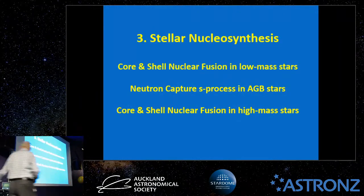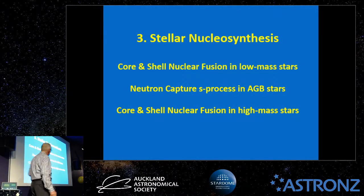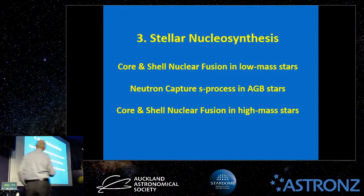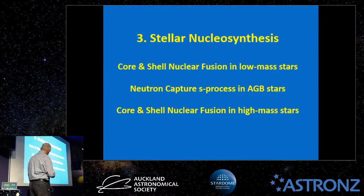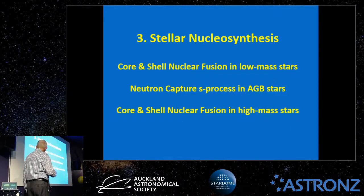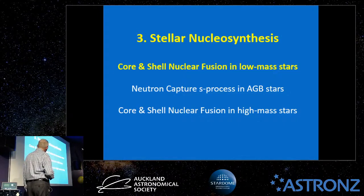Stellar nucleosynthesis: what new elements and atoms are made inside stars. I've broken this into: core and shell nuclear fusion in low mass stars; neutron capturing through the S-process in AGB (asymptotic giant branch) stars — a very late phase in the evolution of stars less than 8 solar masses; and then nuclear fusion in the core and shells of high mass stars.